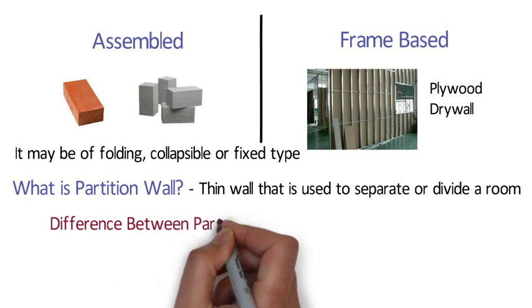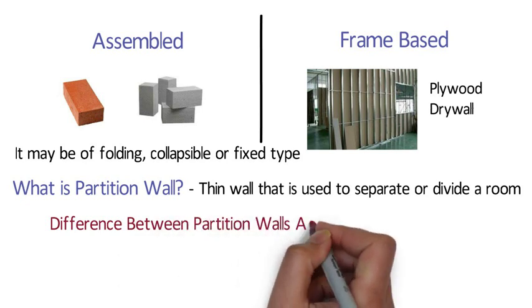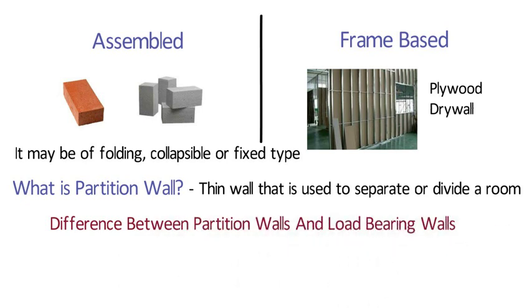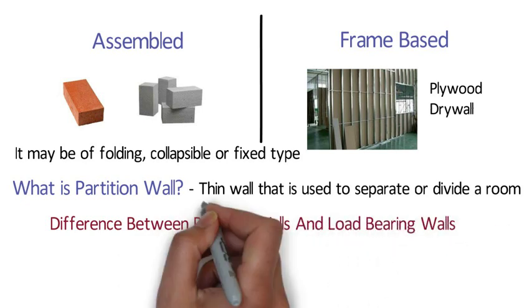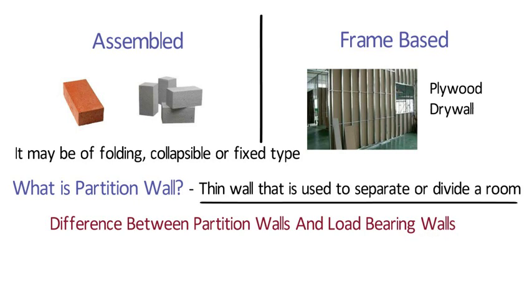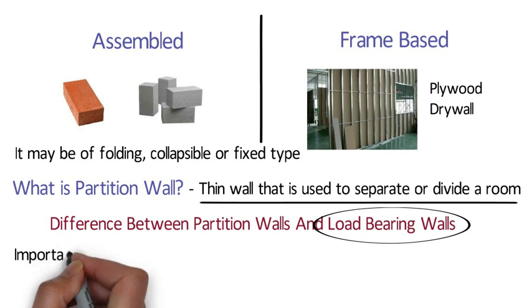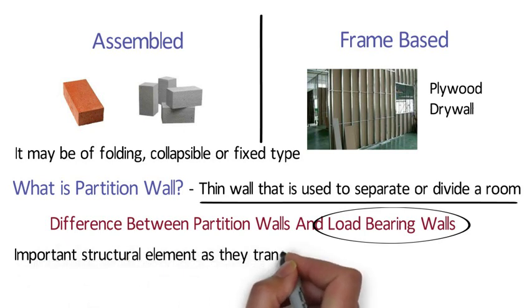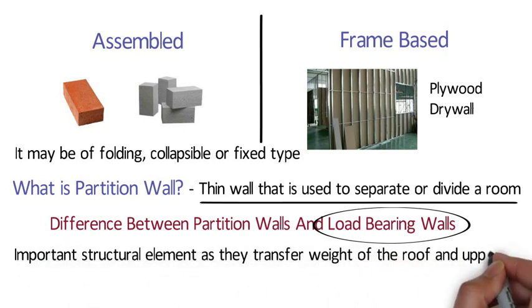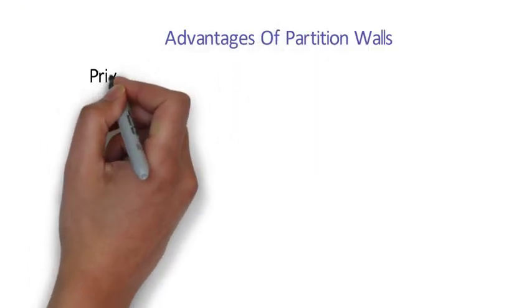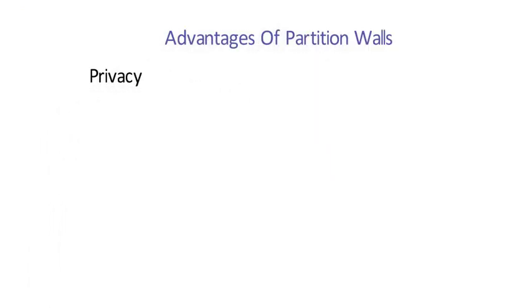Difference between partition walls and load bearing walls: Partition walls do not support any weight — they simply divide the interior space into rooms. Whereas load bearing walls serve as an important structural element, as they transfer the weight of the roof and upper floors to the foundation.